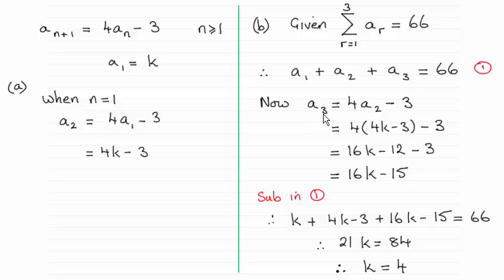So for a3 I just set n equal to 2 in this. So I get a3 equals 4 times a2 minus 3. So that's 4a2 minus 3. Substitute what a2 is in here, which is 4k minus 3. Expand and simplify and we get that a3 equals 16k minus 15.